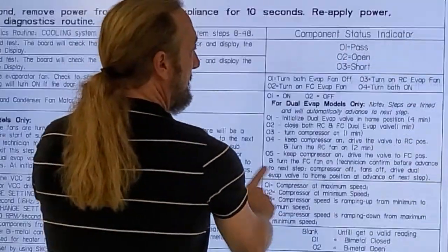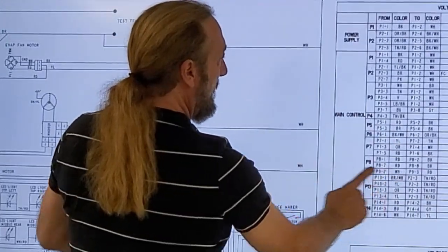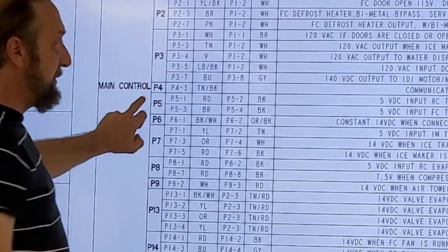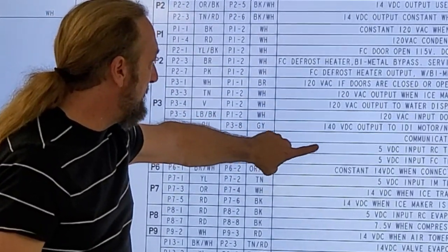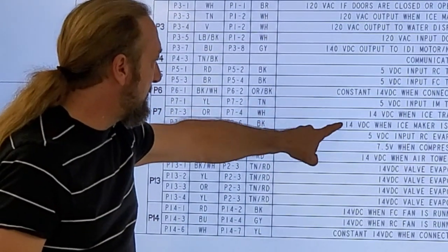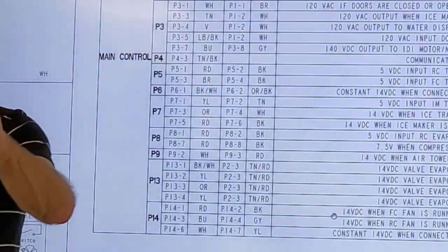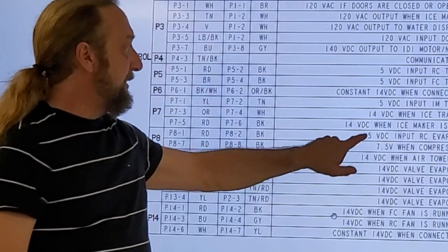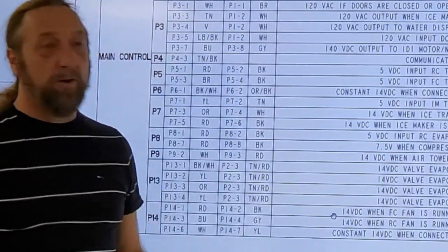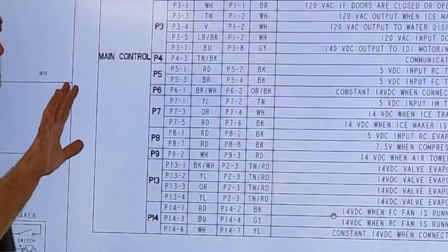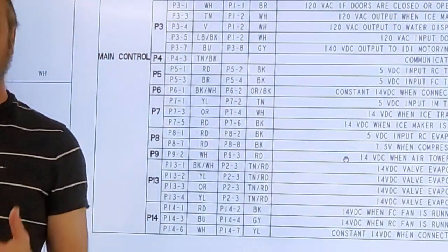We have to go down here on this schematic to the voltages we're supposed to be testing. If we look at the power supply — the last three. There are three voltages: 14 volts, 5 volts, and 7.5 volts on one pin. Almost everything is running off of 14 volts. All your sensors are running off of 5 volts — all the thermistors are getting 5 volts from the board. But your fan motors and other components that actually operate and do things are usually 14 volts.